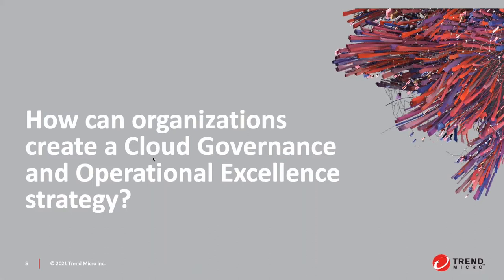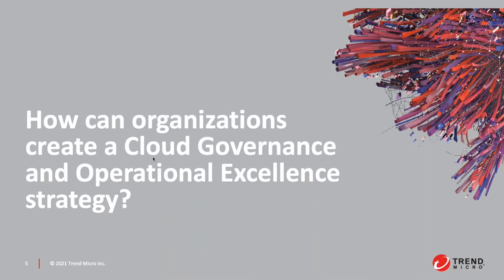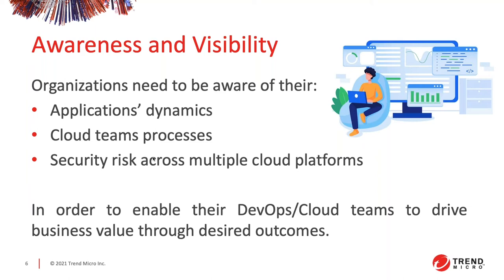Here are some important areas to bring awareness to: how can organizations create a cloud governance and operational excellence strategy? The first piece — very important — is awareness and visibility. Your organization needs to be aware of their applications and what cloud teams are creating, destroying, or processing in the cloud. Securing risk across multi-cloud platforms, but also your regular data centers, and all these things are being built around CI/CD pipelines.